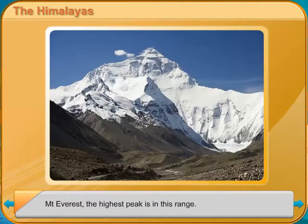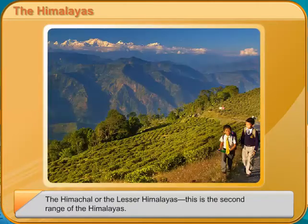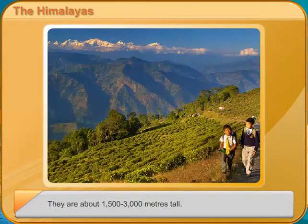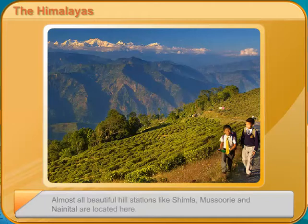The Himachal, or the Lesser Himalayas, is the second range of the Himalayas. They are about 1500 to 3000 meters tall. Almost all beautiful hill stations like Shimla, Mussoorie, and Nainital are located here.